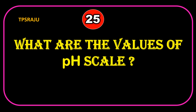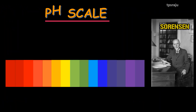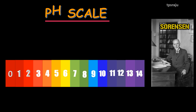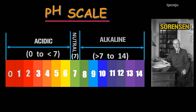What are the values of the pH scale? Sorensen introduced the pH scale, which ranges from 0 to 14. pH value indicates the concentration of H⁺ ions. Values less than 7 represent acidic nature, pH 7 is neutral, and values above 7 up to 14 represent basic nature.